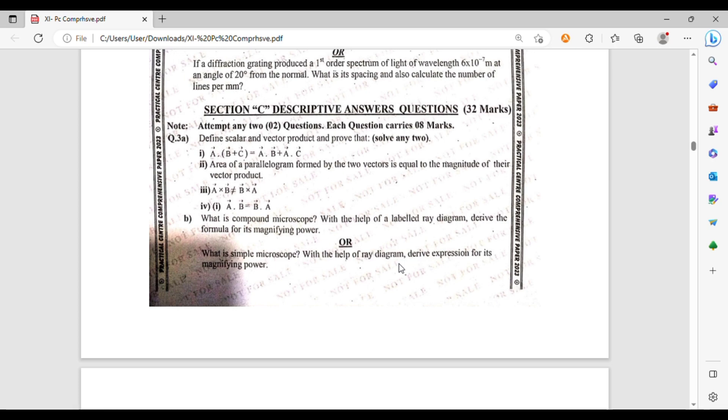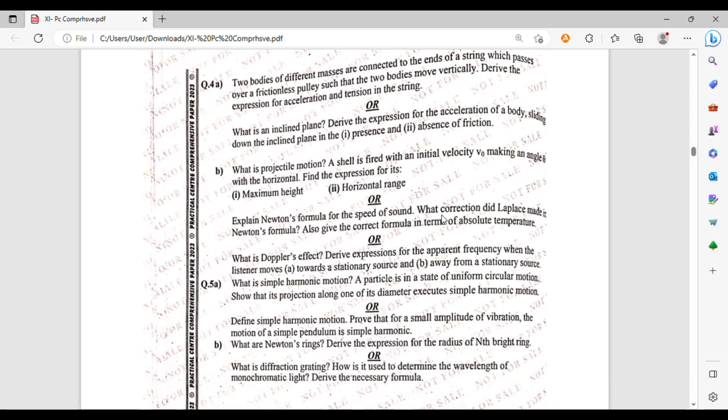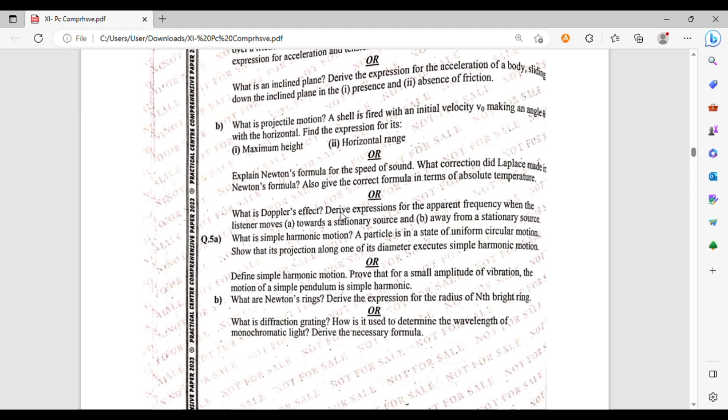Question number 4, part a: two bodies of different mass are connected to the end of a string which passes over a frictionless pulley such that the two bodies move vertically. Derive the expression for acceleration and tension in the string. Or what is an inclined plane? Derive the expression for the acceleration of a body sliding down the inclined plane in presence and absence of friction. Part b: what is projectile motion? A shell is fired with an initial velocity v naught making an angle theta with the horizontal. Find the expression for its maximum height and horizontal range. Or explain Newton's formula for speed of sound. What correction did Laplace make in Newton's formula? Also give the correct formula in terms of absolute temperature. Or what is Doppler effect? Derive expression for the apparent frequency when the listener moves towards the stationary source and away from the stationary source.